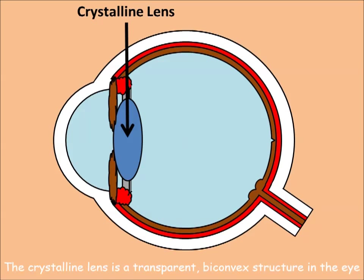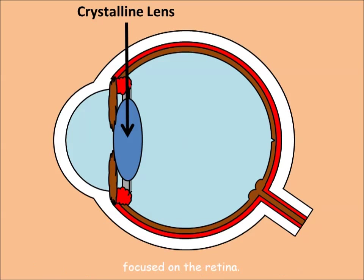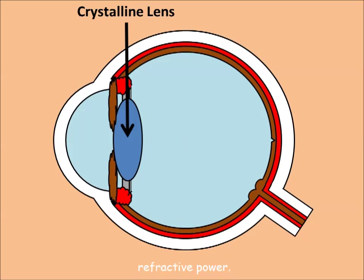The crystalline lens is a transparent, biconvex structure in the eye that, along with the cornea, helps to refract light to be focused on the retina. The lens contributes to one-third of the eye's total refractive power. Yellowing of the lens leads to cataract.